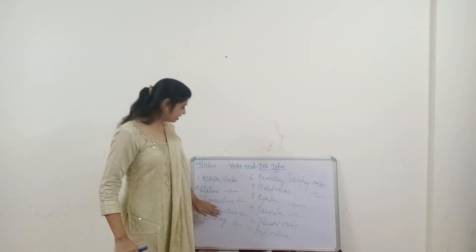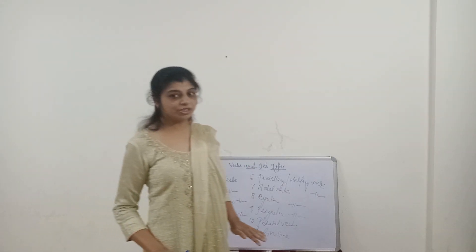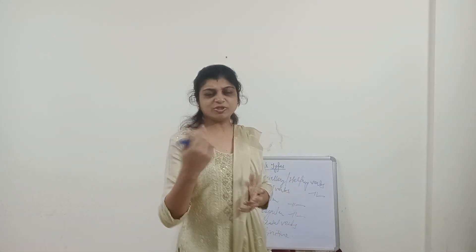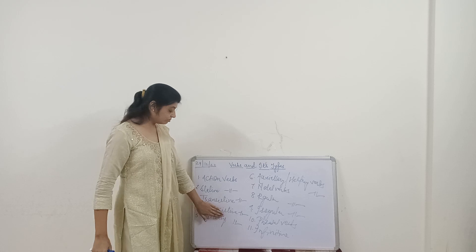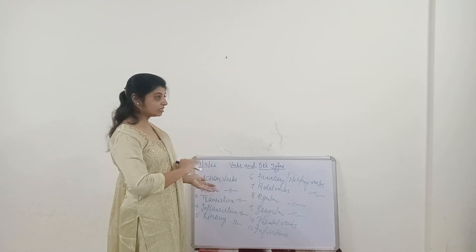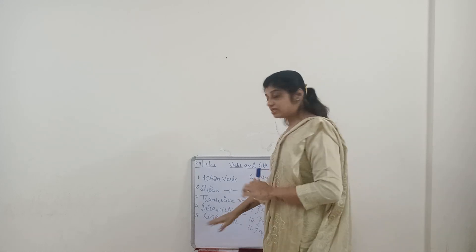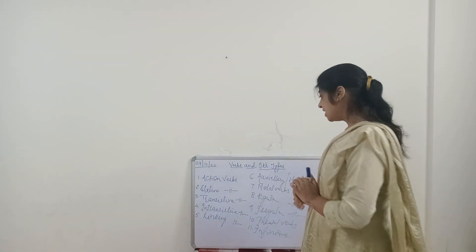Intransitive verbs are exactly opposite — they are not at all concerned with a direct object. For example: Aeroplane flies. No object is required; subject and verb alone complete the meaning of the sentence. To recap: transitive verbs are directly connected with an object, whereas intransitive verbs are not connected with an object at all.